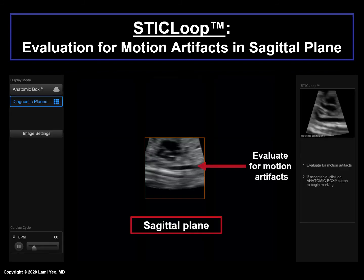How does one evaluate for motion artifacts in the sagittal plane? Although much of the fetal anatomy may be affected, it is helpful to focus on the wall of the longitudinal descending aorta. In the absence of motion artifact, the wall should appear straight. However, when motion artifacts are present, they can affect the characteristics of the longitudinal descending aorta wall in several ways. We have categorized this into three types: the wavy lasagna wall, water dive, and piano keys. All of these motion artifacts will be reviewed in the Part 2 STICLOOP lecture of this series. If the sagittal plane image is acceptable, the anatomic box button should be pressed to begin the marking process for the FINE method.